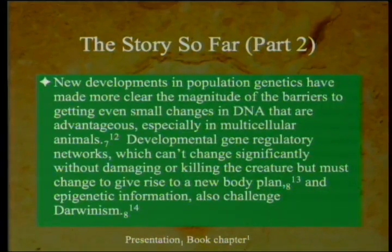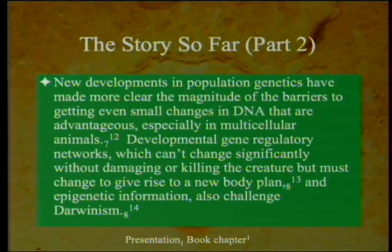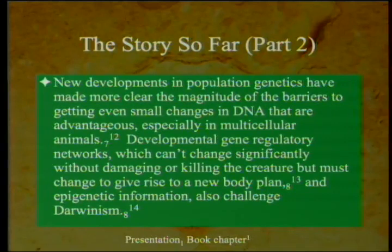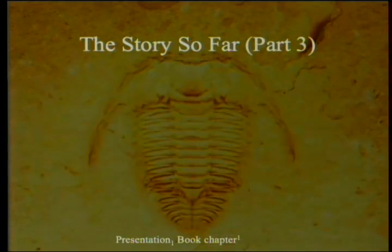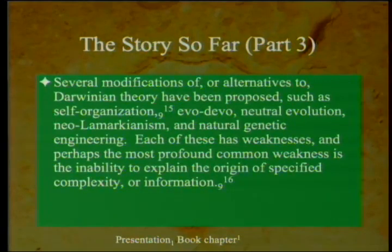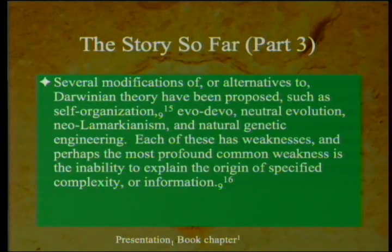New developments in population genetics have made more clear the magnitude of the barriers to getting even small changes in DNA that are advantageous, especially in multicellular animals. Developmental gene regulatory networks can't change significantly without damaging or killing the creature, but must change to give rise to a new body plan. Epigenetic information also challenged Darwinism. Several modifications of or alternatives to Darwinian theory have been proposed, which implies that Darwinian theory is somewhat weak itself — otherwise you wouldn't have to propose a new theory to replace it.